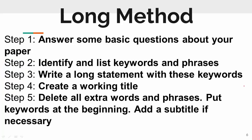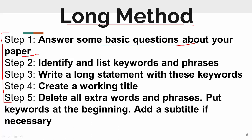Now talking about the long-form method to write the title of your research article — this method includes five steps. In step one, you ask yourself some basic questions about your paper. In step two, you identify and list the keywords and phrases from your work. In step three, you write a long statement using those keywords and phrases. In step four, you create a working title, and in step five, you delete unnecessary words to make it final.